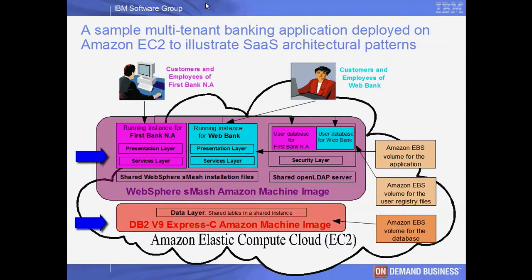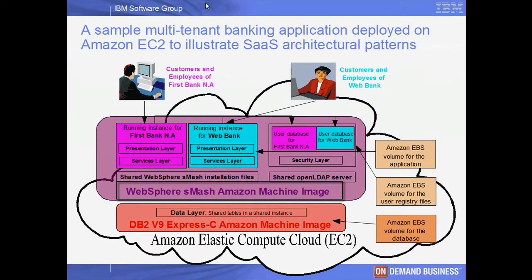The sample application runs on IBM WebSphere SMASH and DB2 Express-C middleware products pre-installed in AMIs. WebSphere SMASH is an application server which can be used to create, assemble, and deploy applications written in dynamic scripting languages such as Groovy quickly and easily.